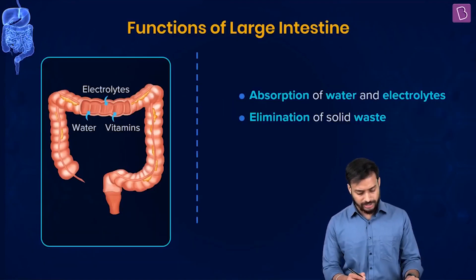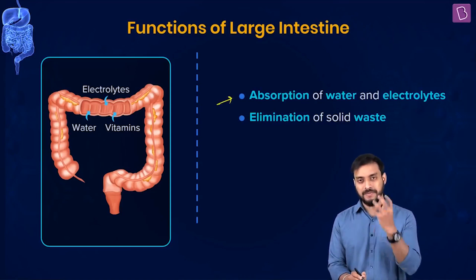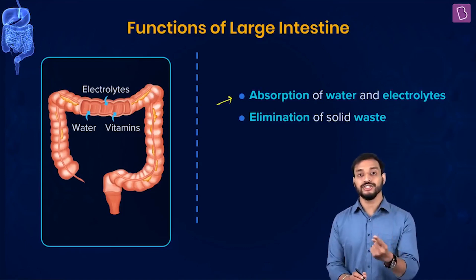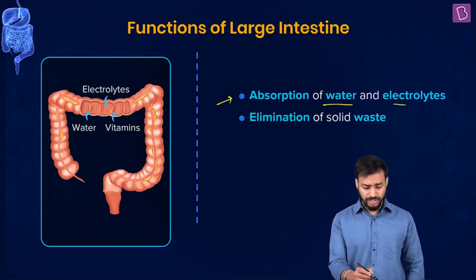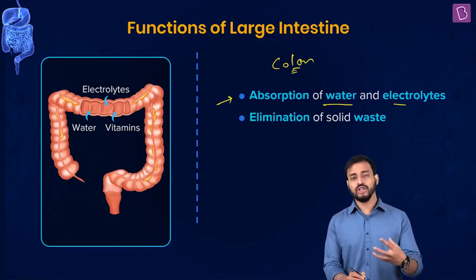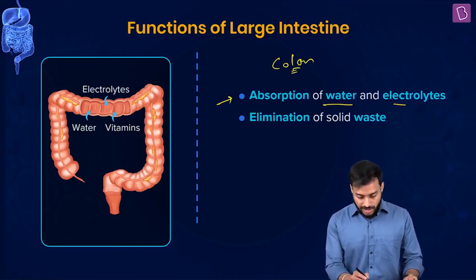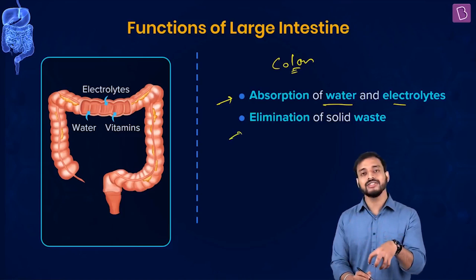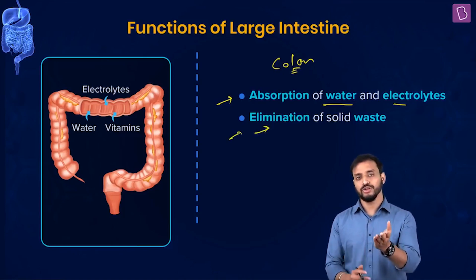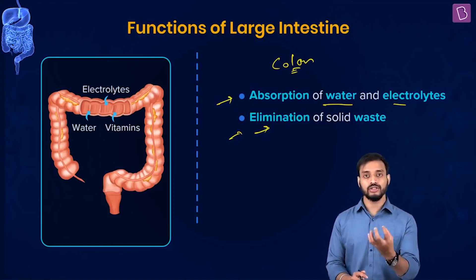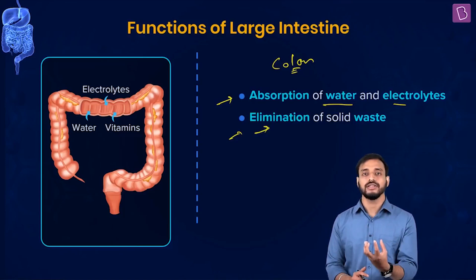Now let's disclose the functions of the large intestine. The major function is absorption of water and electrolytes - you would not call it digestion. The colon is the region where lots of absorption of water molecules and electrolytes happens. The later part of the large intestine is also responsible for the elimination of solid waste - actually undigested products.